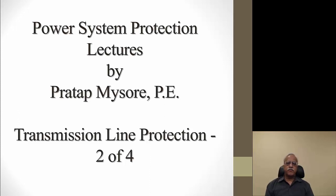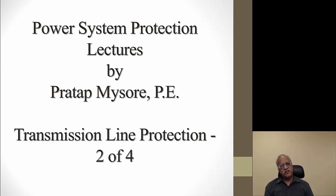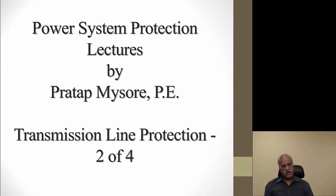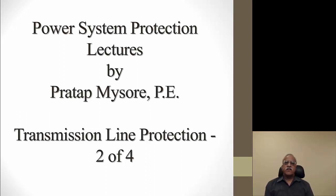In the very first lecture we covered the parameters of a transmission line. A transmission line has a conductor — it could be an overhead conductor or an underground cable — and it has resistance, inductance, and capacitance. We went through formulae for calculating these for an overhead transmission line, and how to get this information from the wire manufacturers. Cables are a little more complex, but you do get this information. The intent of that lecture was to make you aware of how you can verify the data furnished to you to do the settings on the transmission lines.